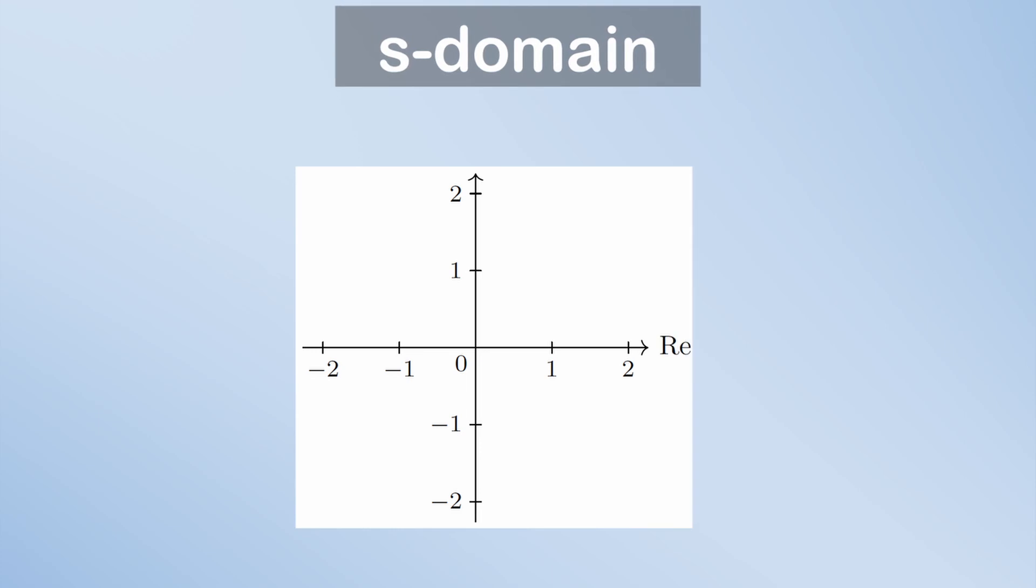So first, let's define them. The poles and zeros are defined at specific coordinates in the S domain. The S domain is complex, so there's both a real axis and an imaginary axis. So pole and zero coordinates have both real and imaginary components.